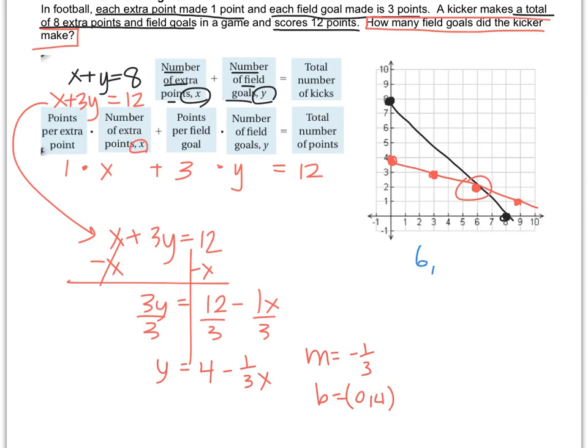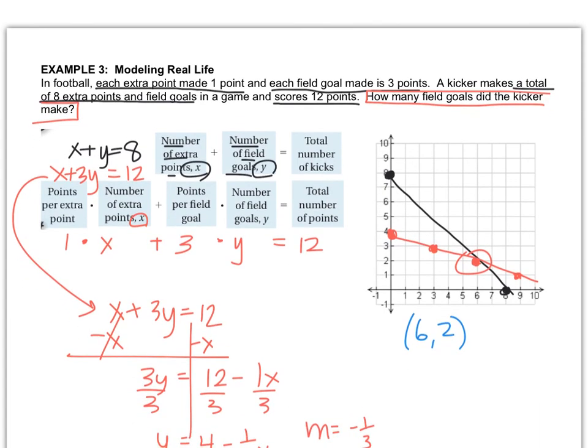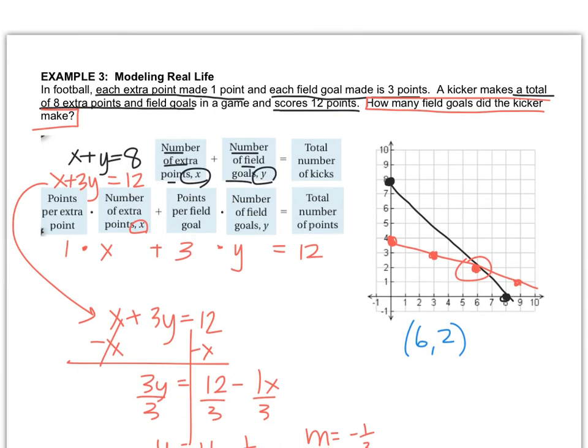But word problems require word answers. I have to go back up to the story and read the words. It says, how many field goals did the kicker make? The number of field goals was y. Every time it said number of field goals, there was a y next to it. Our y value is the number of field goals. So the actual answer is two field goals.